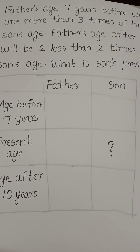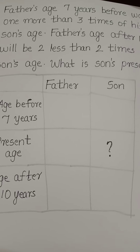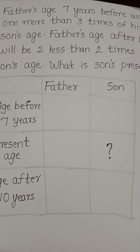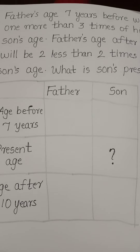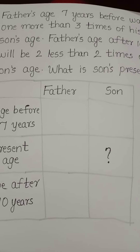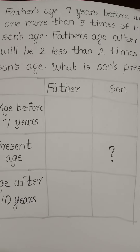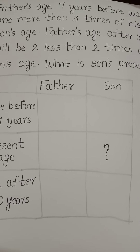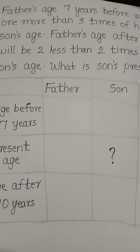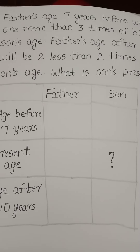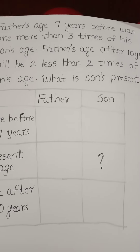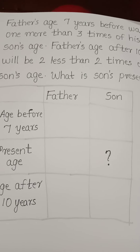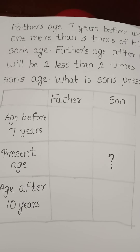In this class, this is the age problem. Father's age 7 years before was 1 more than 3 times of his son's age. Father's age after 10 years will be 2 less than 2 times of son's age.